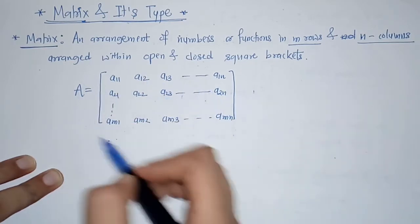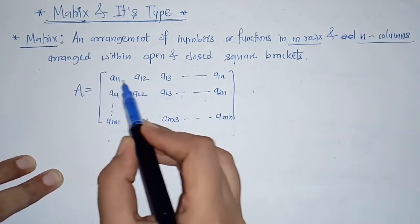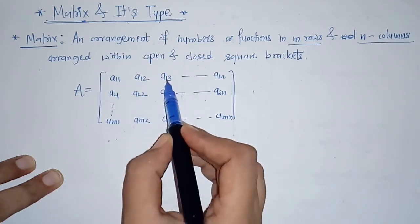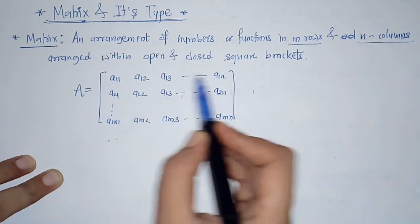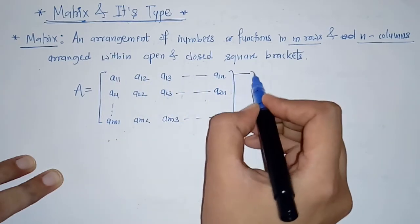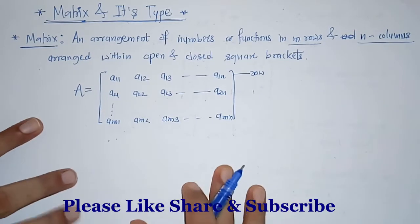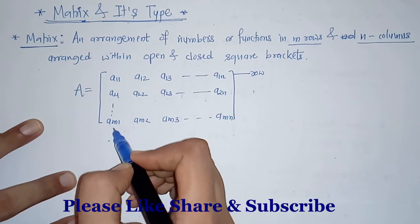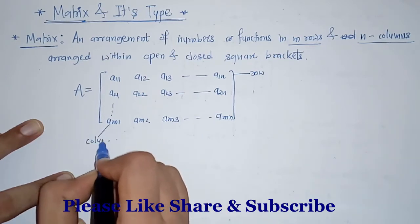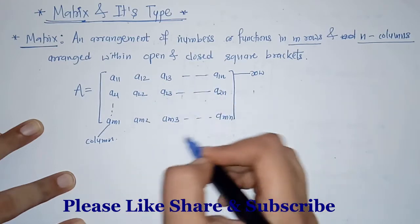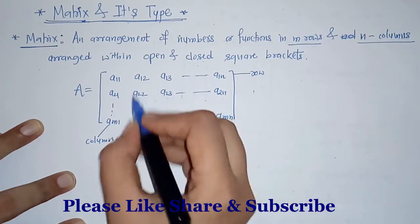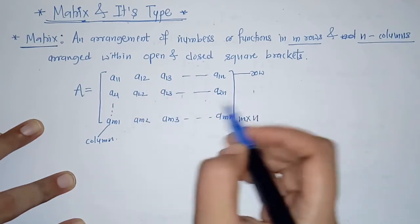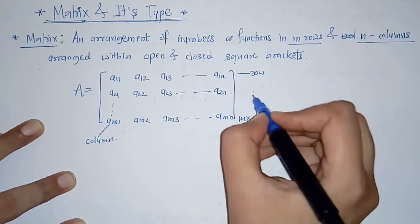Here we have a given matrix A. In the first row we have a11, a12, a13 up to a1n. This horizontal line is called the row of this matrix. Next, in the vertical direction we have a11, a21 up to am1 — these we call the column of this matrix. So how many numbers do we have here? We have a total of m into n numbers.